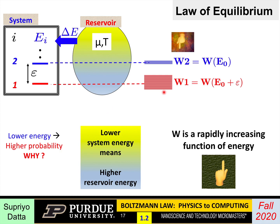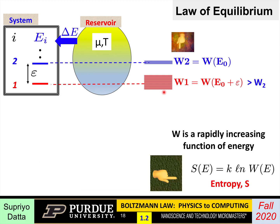What we are trying to understand is why the system has a higher probability of being in a lower-energy state. The answer is: if the system has lower energy, the reservoir has higher energy, and if it has higher energy, it can access many more states. So we define something called entropy — one of those very deep, seminal concepts. Entropy S is proportional to the logarithm of the number of states W available to the reservoir when it has energy E. The more energy E, the more states available, and consequently the bigger the entropy.